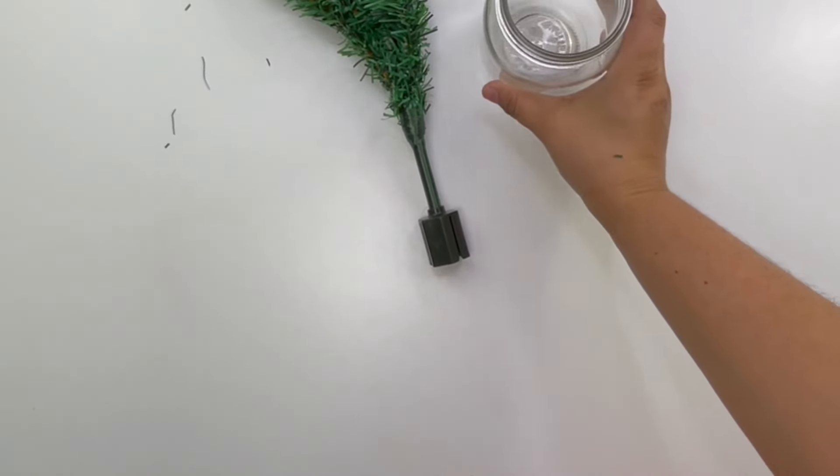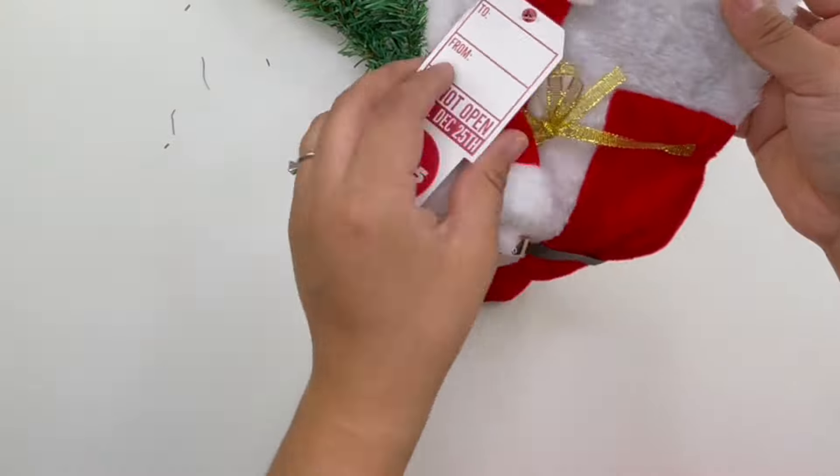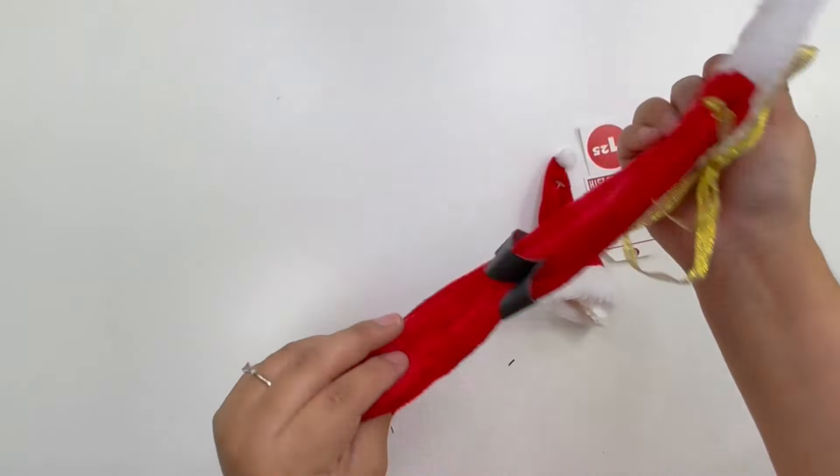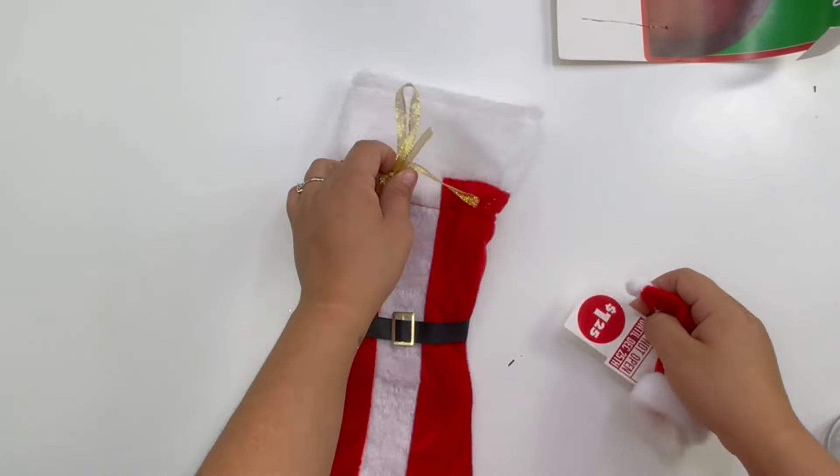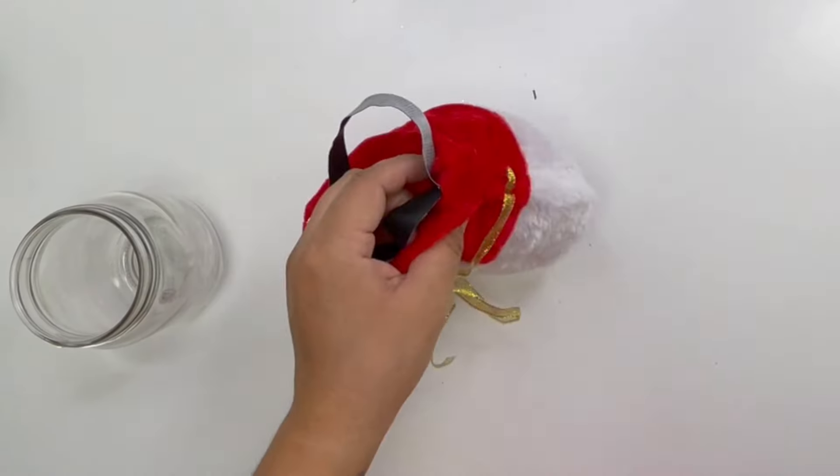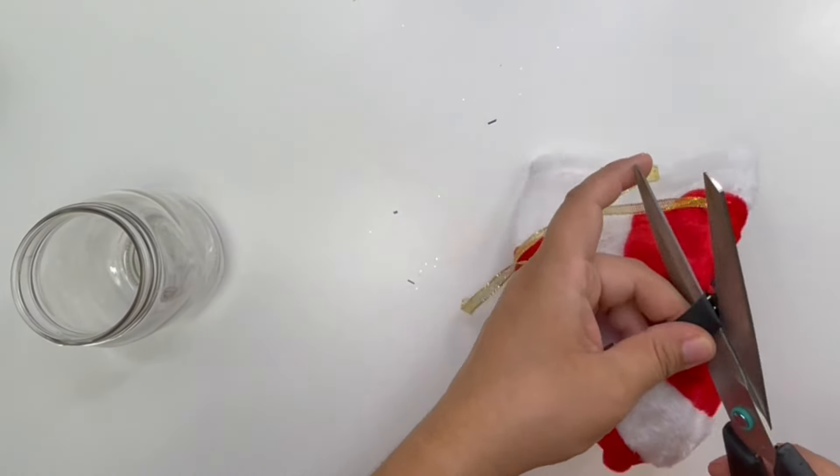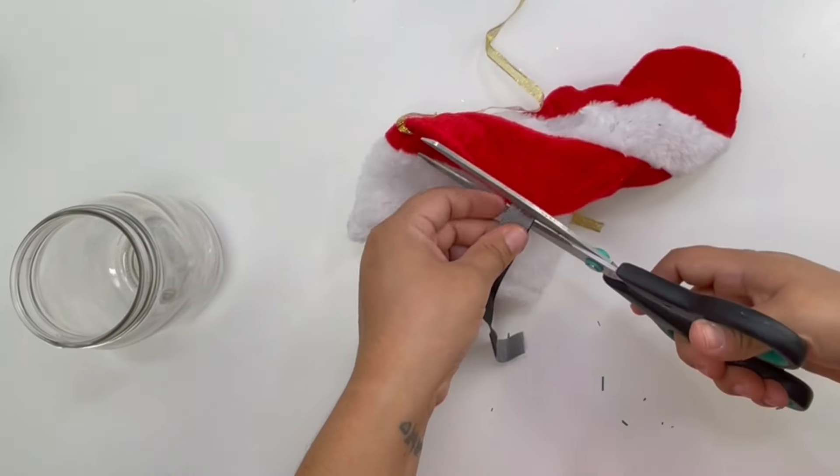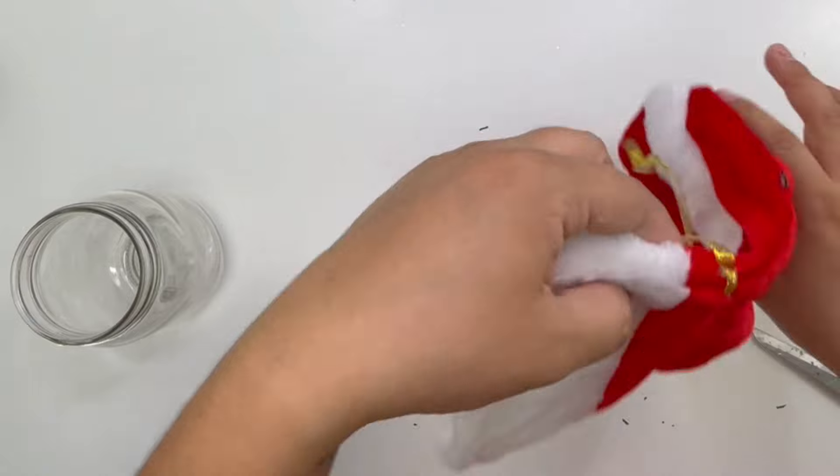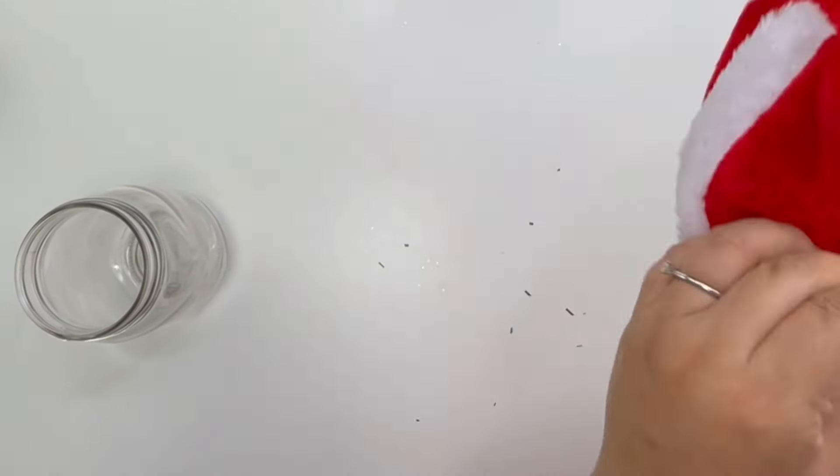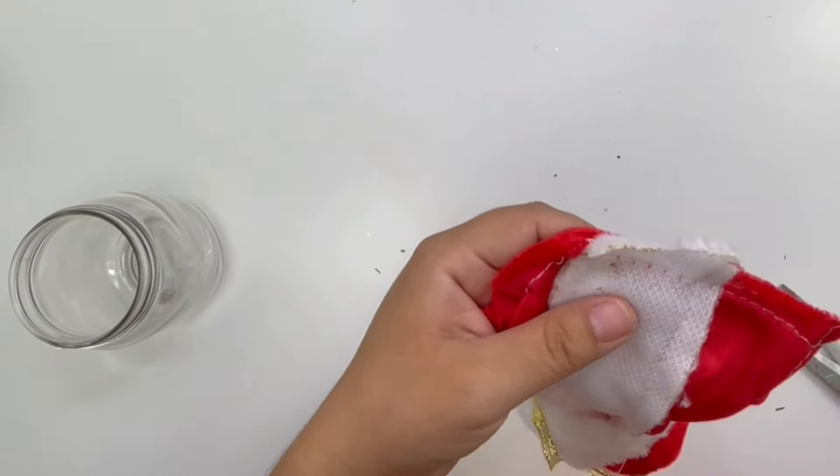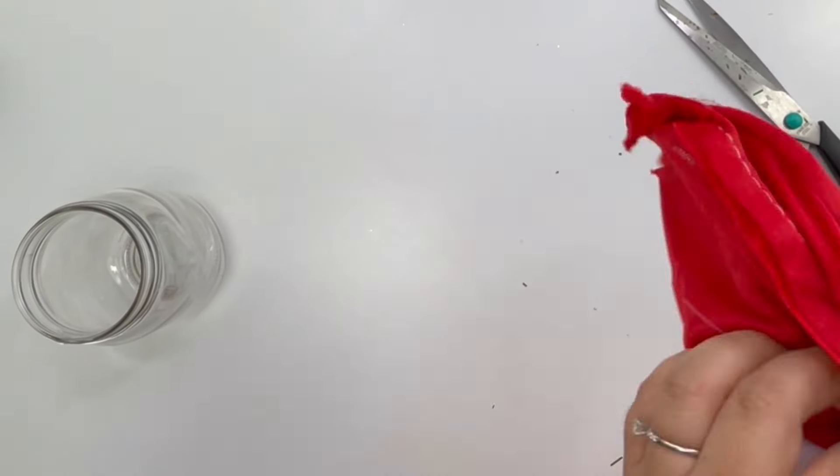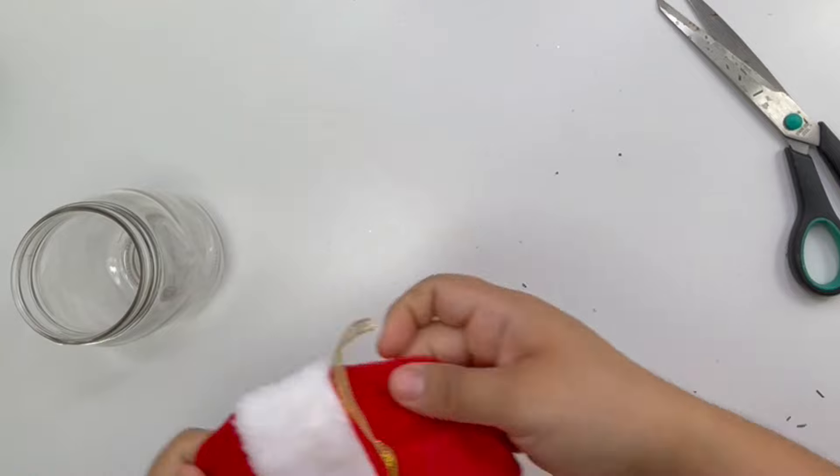So now I'm using a Dollar Tree jar and that little wine bottle bag which I am going to remove the little hat and the belt. Then I'm going to turn this inside out and I am going to cut a little hole at the top.